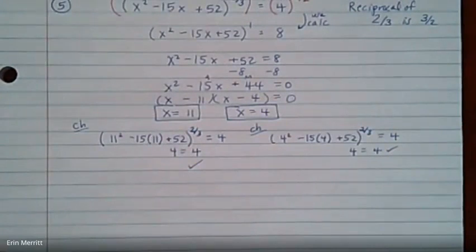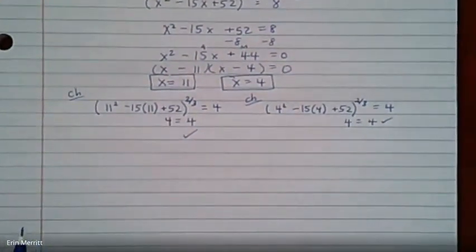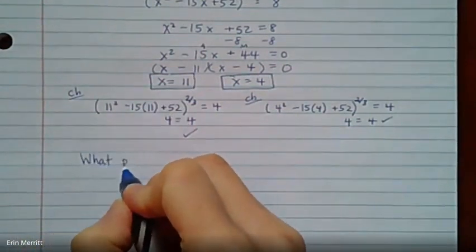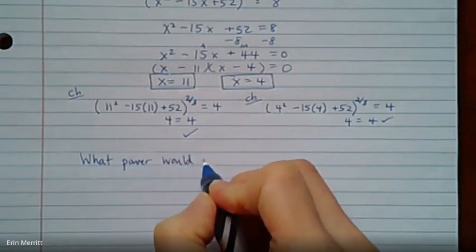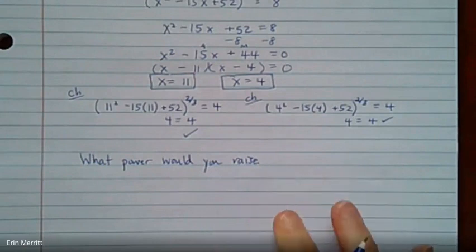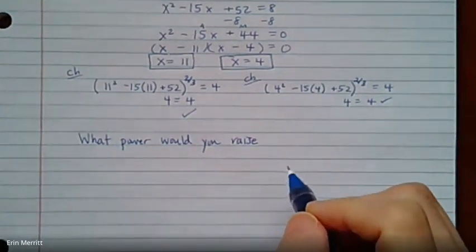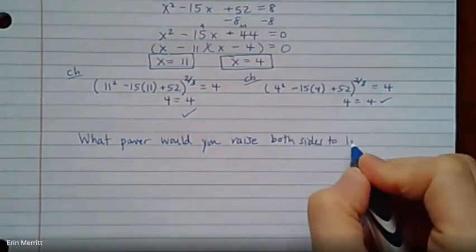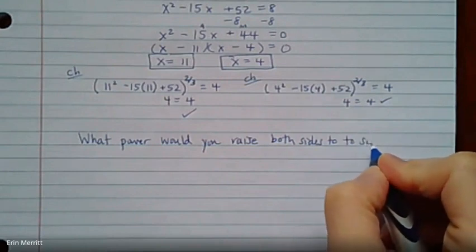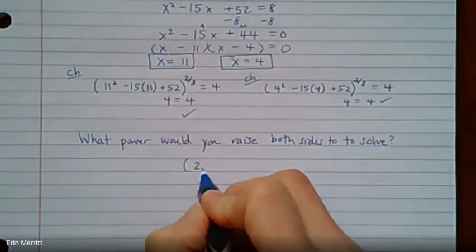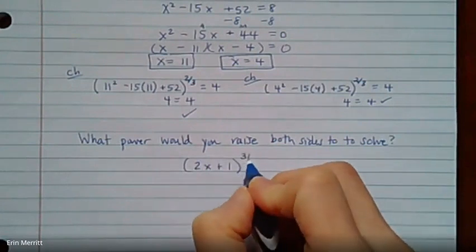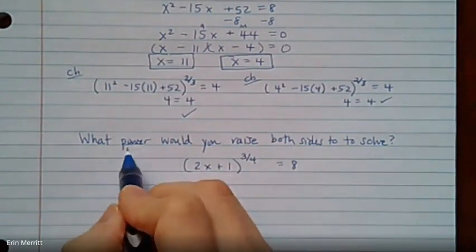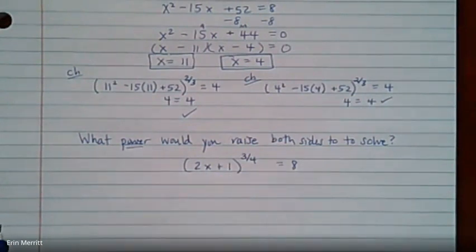Before you click out of the video, your second question that you have to answer right here is I want to know what power would you raise both sides to to solve this little equation? So if I give you 2x plus 1 raised to the 3 fourths power equals 8. You don't have to solve it. I want to know what power are we raising both sides to to solve it. Thanks, guys.